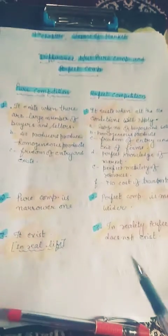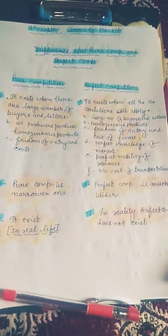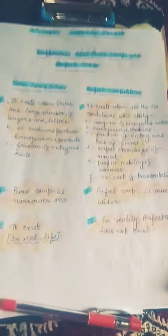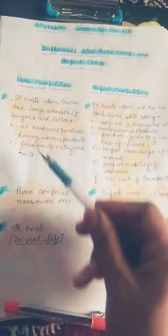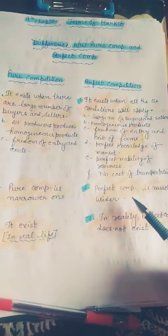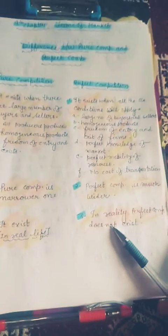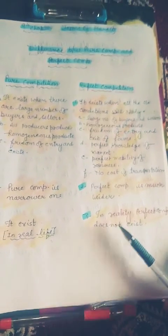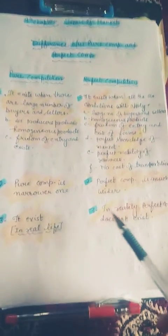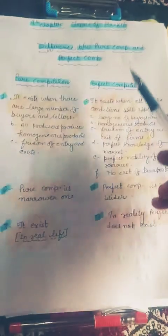I hope all of you understood the difference. There are only three differences between pure competition and perfect competition. Pure competition requires only three conditions, so it is a narrower concept. Perfect competition requires all six conditions, so it is a wider concept. Pure competition may exist in practical life, but perfect competition does not exist in reality. Focus on this because in the viva the examiner asks for the difference.